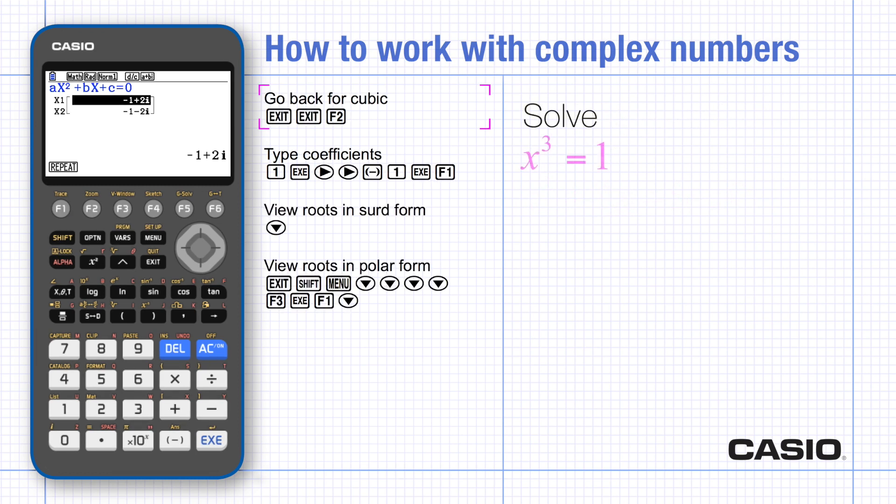To solve a cubic equation, go back through the menus and choose polynomial degree 3. Type the coefficients. Do take care here that the constant term needs to be on the left hand side of the equation, so we need negative 1 here and solve.